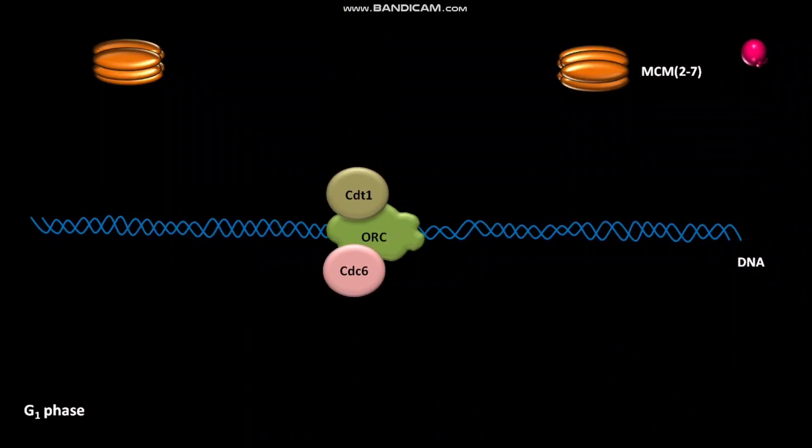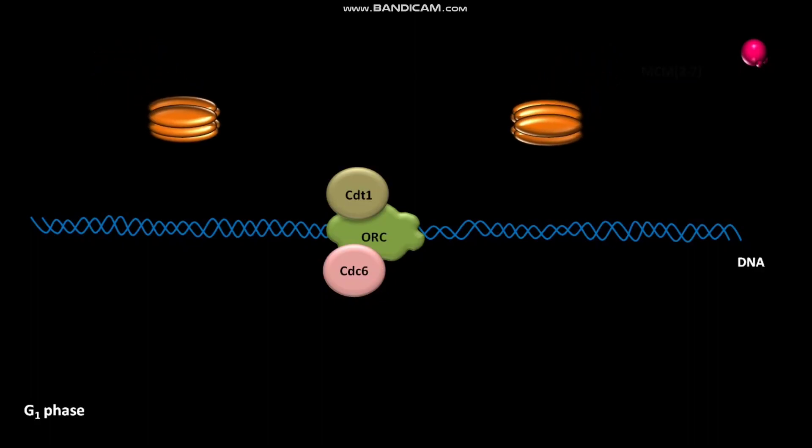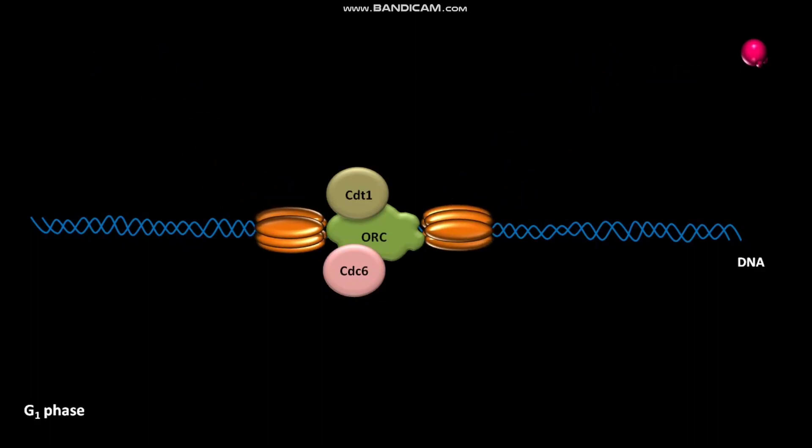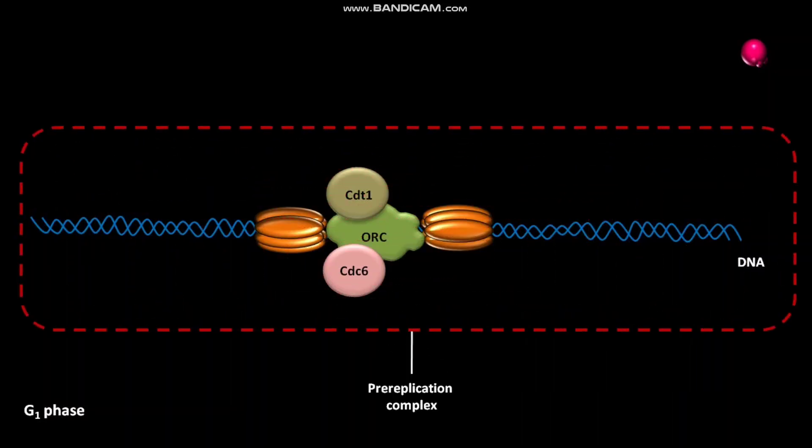The resulting protein complex assembles MCM ring complexes on the adjacent DNA. The MCM has 6 subunits: MCM-2, MCM-3, MCM-4, MCM-5, MCM-6, and MCM-7. The assembly of MCM ring complexes generates a pre-replication complex, or pre-RC.